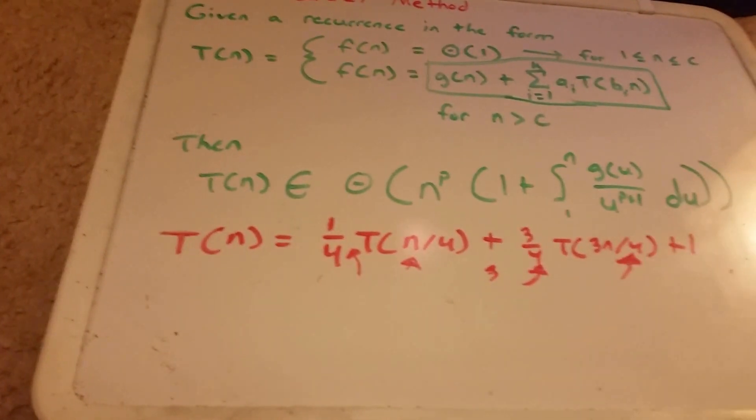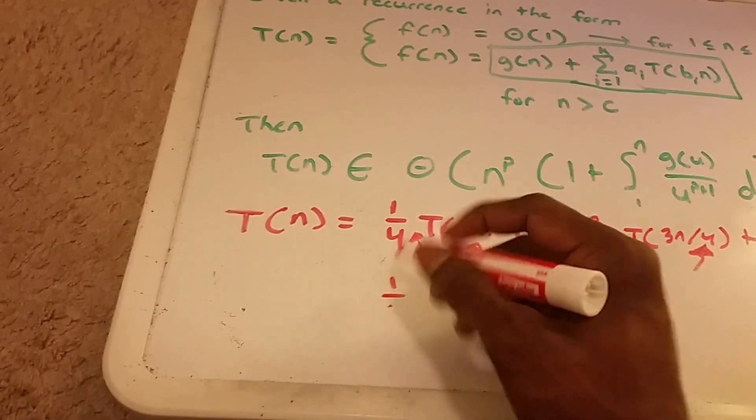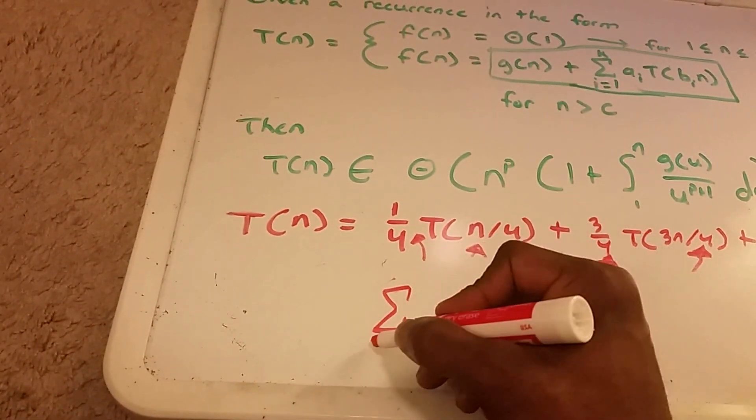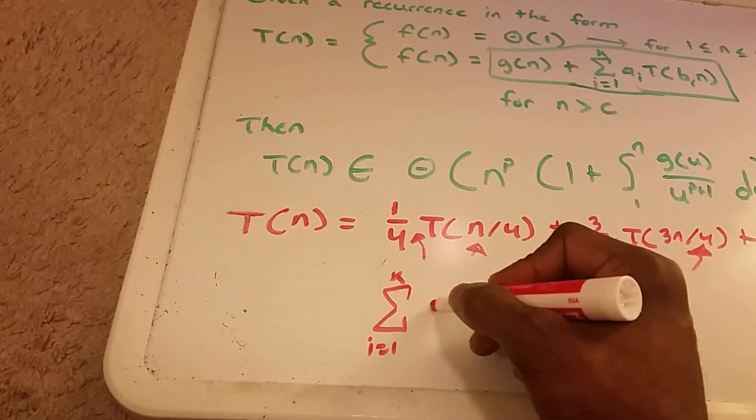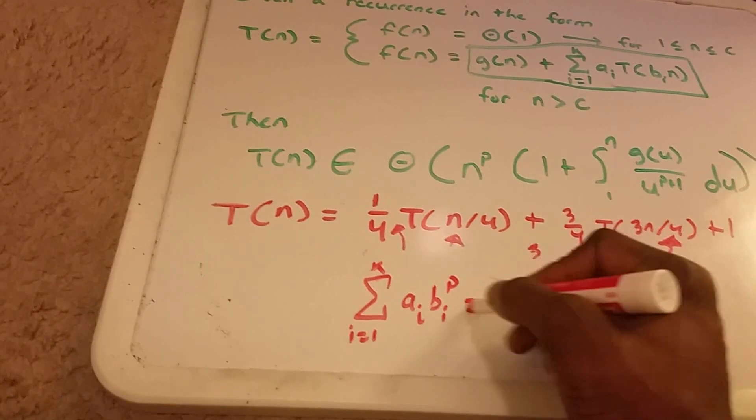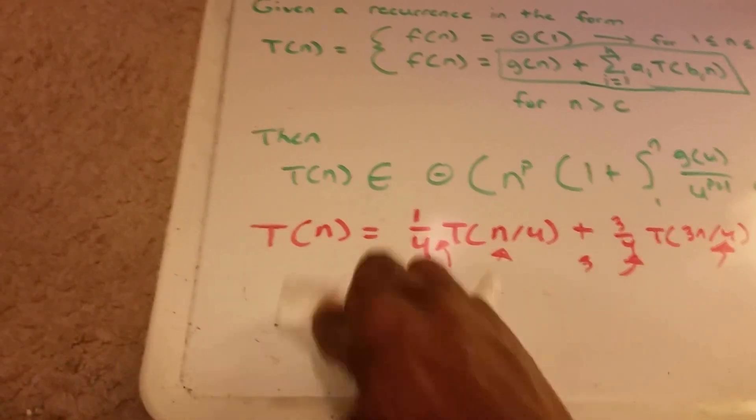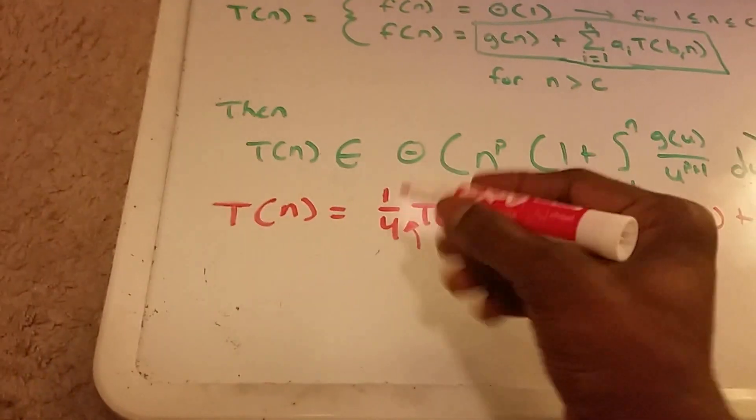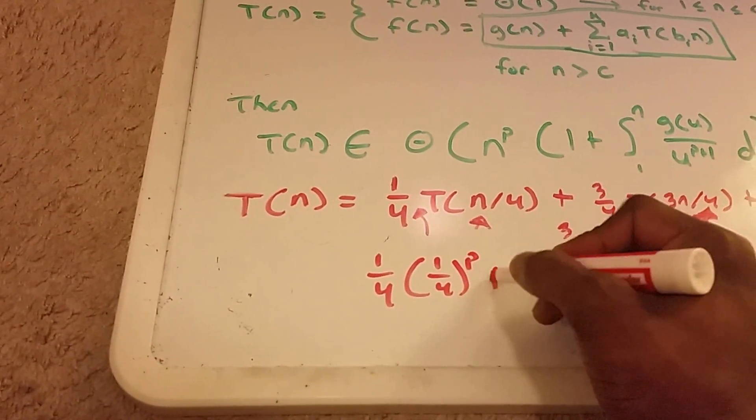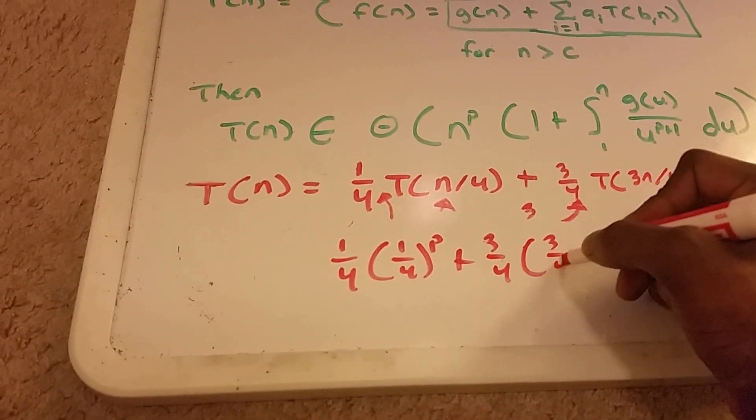Just going to do a little bit of erasing there. Our other condition says, if I remember this correctly, summation from i equals 1 to k of a subscript i times b i to the p has to equal 1. So let's check this. So we have 1 fourth times 1 fourth to the p plus 3 fourths times 3 fourths to the p.